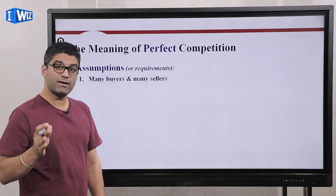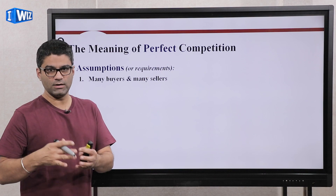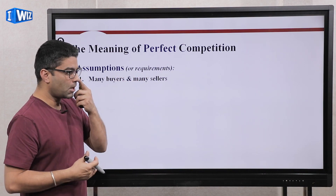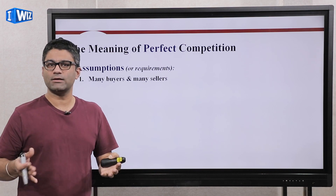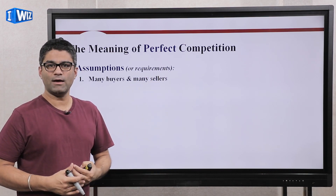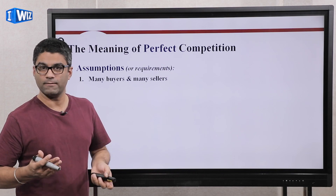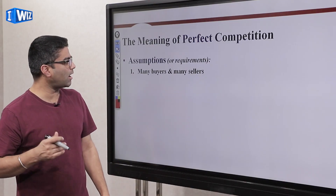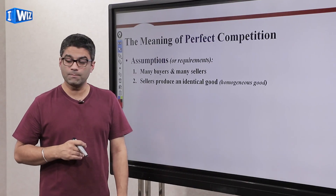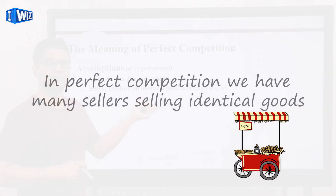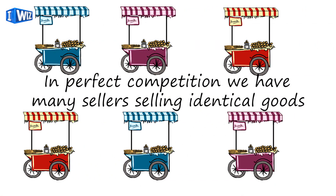Here are the requirements for a market to be perfectly competitive. First, there have to be many, many buyers and many, many sellers — not two or three, but hundreds and thousands. Think about the market as every producer you can potentially buy from in a city or area. Second, each seller produces identical goods, called homogeneous goods. This is a little restrictive because most things we buy are not identical, but sticking to perfect competition, we assume that.